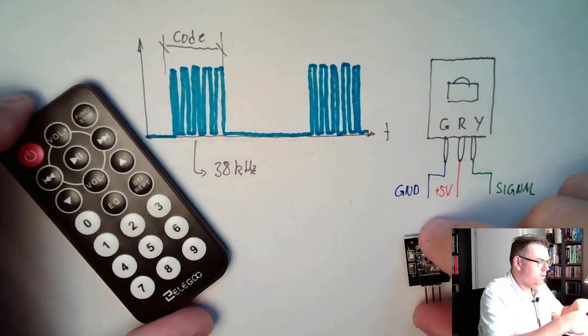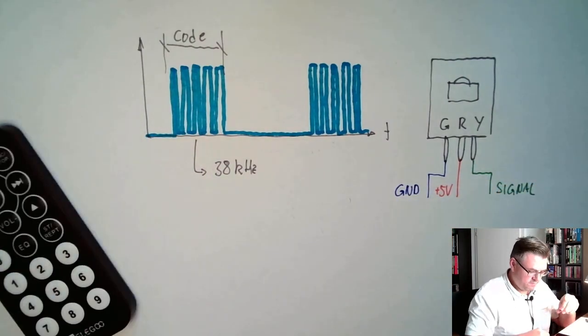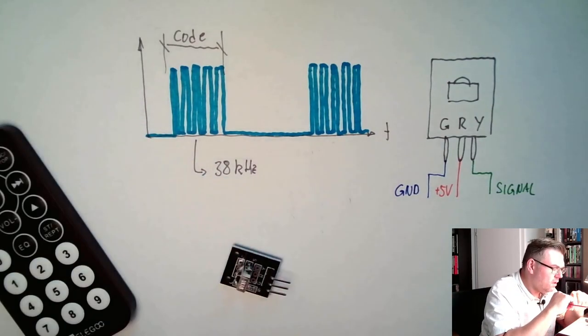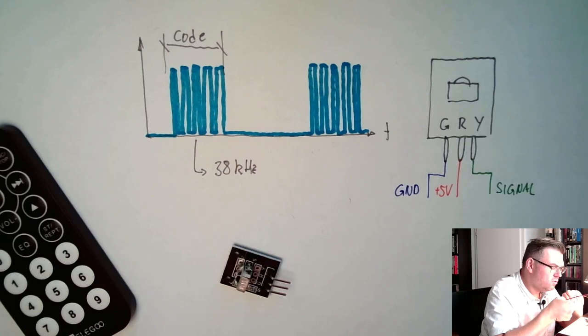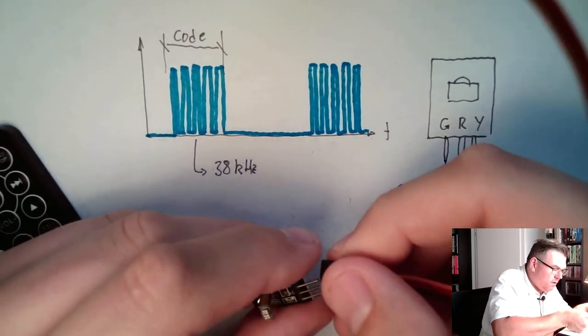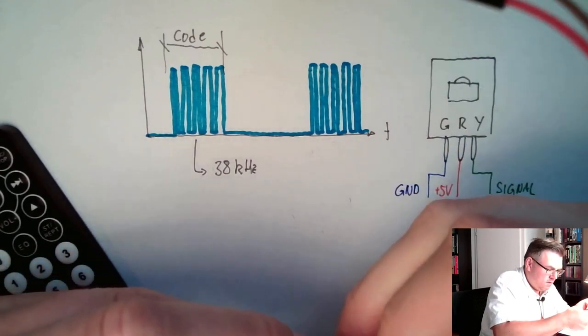So if we want to connect this to our Arduino, we just have to use this type of cable. And then we said G is ground. We'll use the brown one for ground. Then we have red. And then we have the signal.